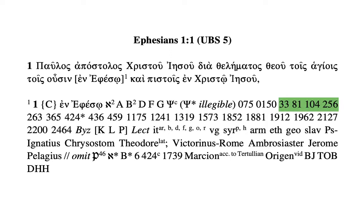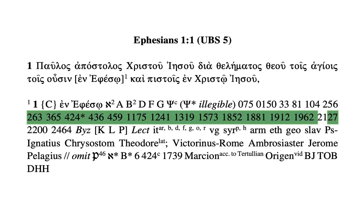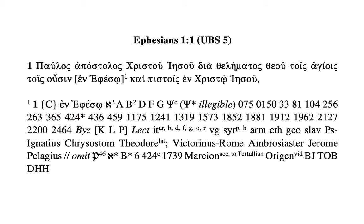Two more majuscules follow — 0285 and 0150 — and then the minuscules begin, starting with 33 and a long list following. One worth noting is 424*, where the asterisk means this is the original hand of 424, implying we should be on the lookout for a corrected version of 424 elsewhere in the footnotes. After two more minuscules, you get 'Byz,' which signals the majority of manuscripts.